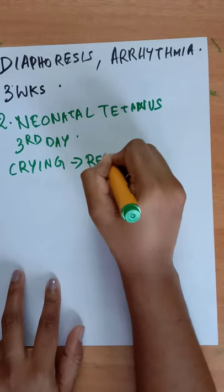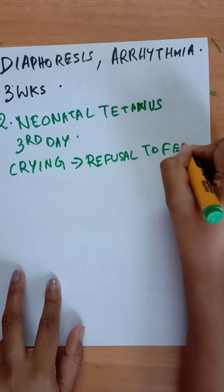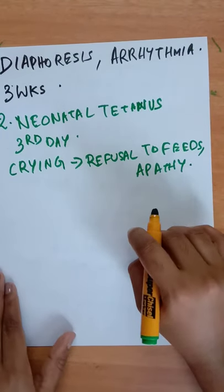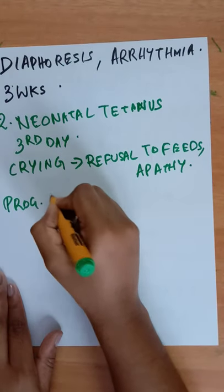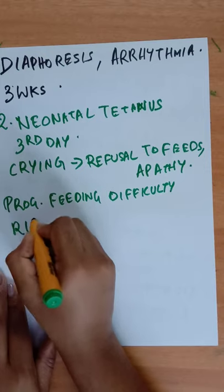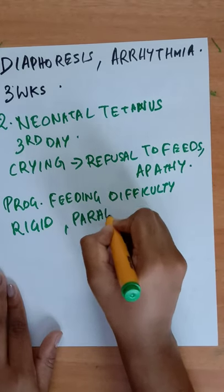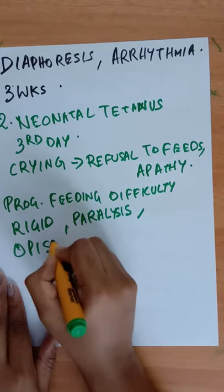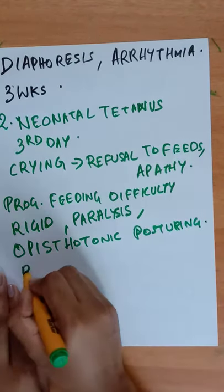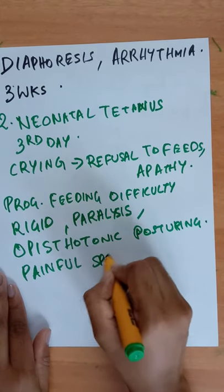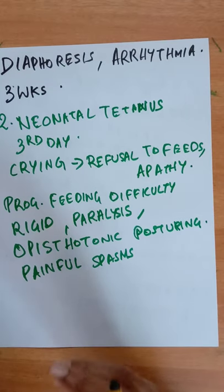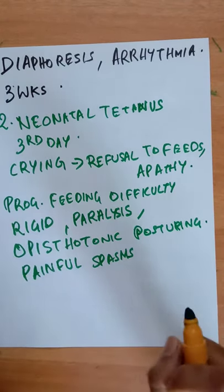Excessive unexplained crying, followed by refusal to feed and apathy are the common initial symptoms. The baby develops progressive feeding difficulty, becomes rigid, develops paralysis, may develop opisthotonic posturing, and may experience painful spasms. The mouth is kept slightly open because of the generalized rigidity.